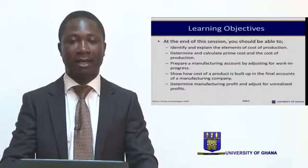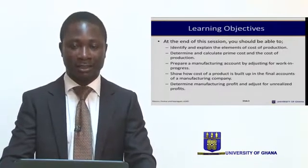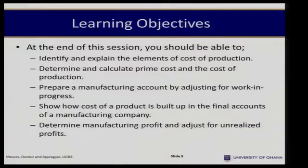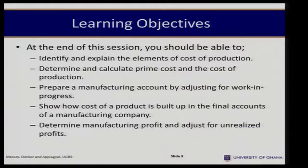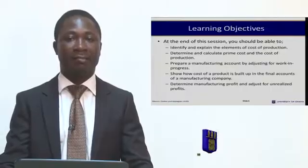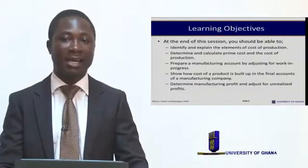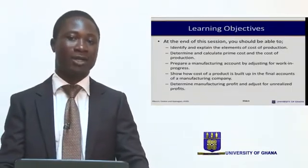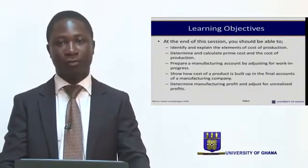Specifically, by the end of our discussion, you should be able to identify and explain the elements of cost of production, determine and calculate prime cost and the cost of production, prepare a manufacturing account by making adjustments for work in progress, show how the cost of a product is built up in the final account of a manufacturing company, and determine the manufacturing profit and any adjustments from a realized profit which would arise as a result of manufacturing profit.